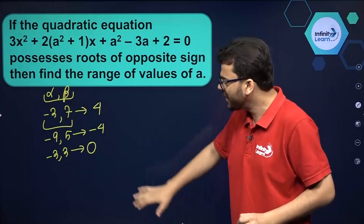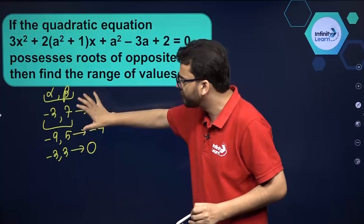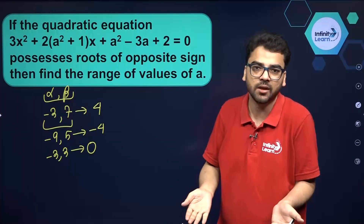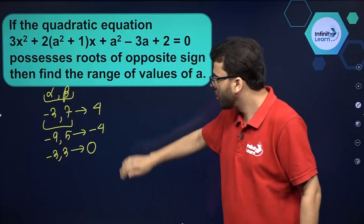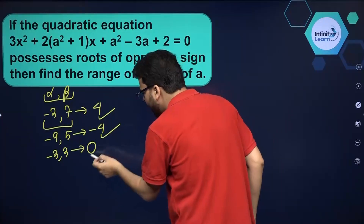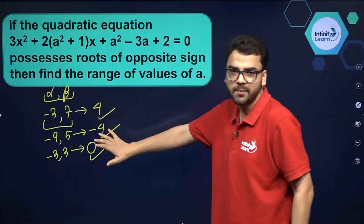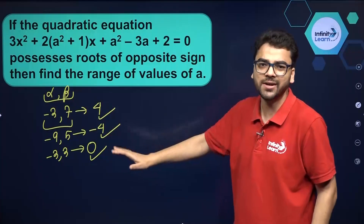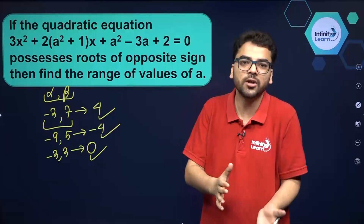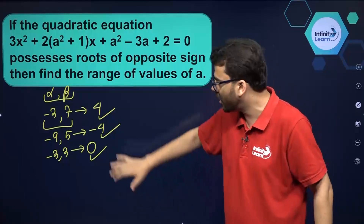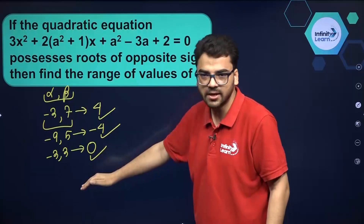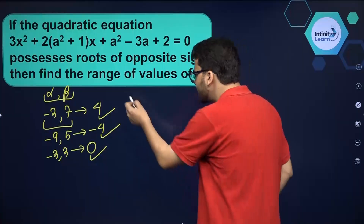It can also happen that the roots are of opposite signs but they are equal, so the sum comes out to be 0. So what does it mean? Taking the sum of roots in this case is not feasible, because you don't know whether the sum is positive, negative, or 0 — it is only mentioned that the roots are of opposite signs, not about their magnitudes.